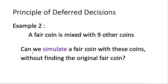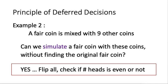The idea is: we flip all 10 coins and check how many heads there are. We are concerned whether the number of heads is even or odd. If even, that is one outcome; if odd, that is the other. We claim this can be used to simulate a fair coin. We want to find the probability that the total number of heads is even, and we apply deferred decisions to analyze this.